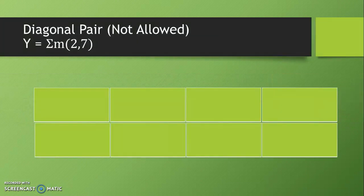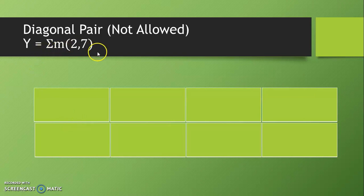We start with pair. We have studied pair, quad and octet in previous lectures. Now diagonal pair is not allowed. Suppose we take one function.